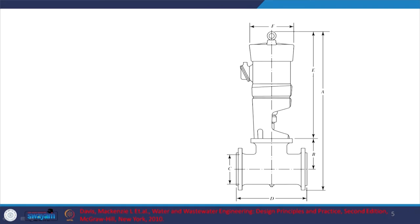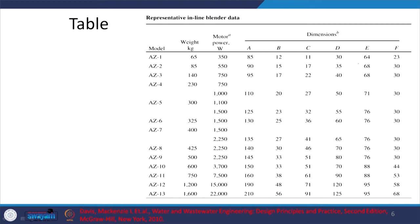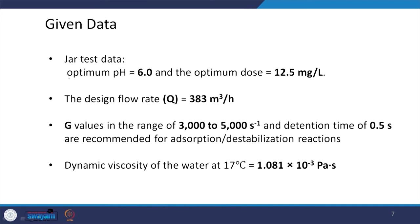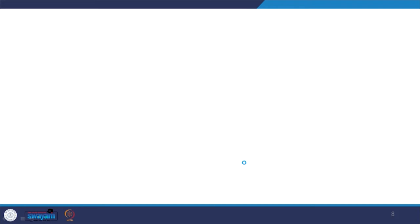We have an inline blender with different dimensions. We want to get our relevant G and theta values — that is what we are concerned with at the end of the day. I have the motor power given, so I can choose one motor as a trial. From the jar test data: pH is 6, optimum dose and flow rate are given. For charge neutralization based adsorption and destabilization, theta is less and G is relatively higher. The temperature is relevant because viscosity of water changes with temperature, and the viscosity at that particular temperature is what we have.